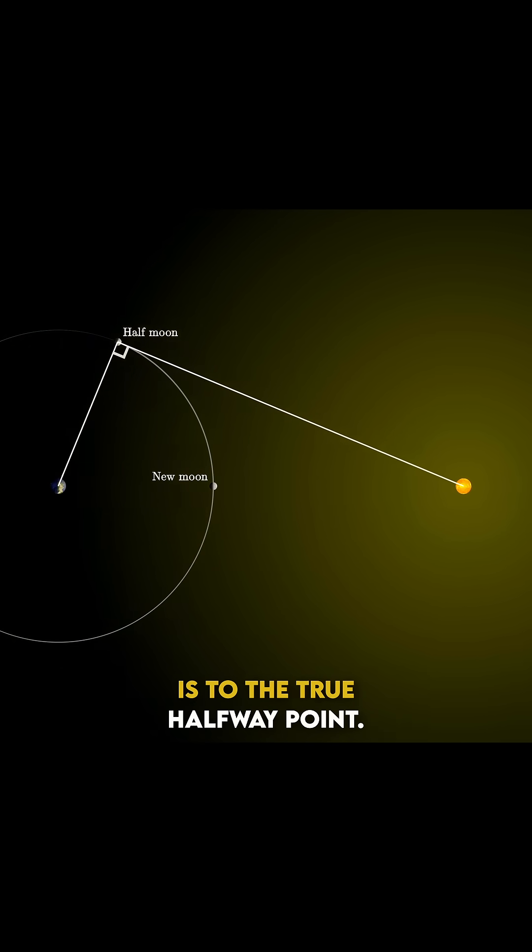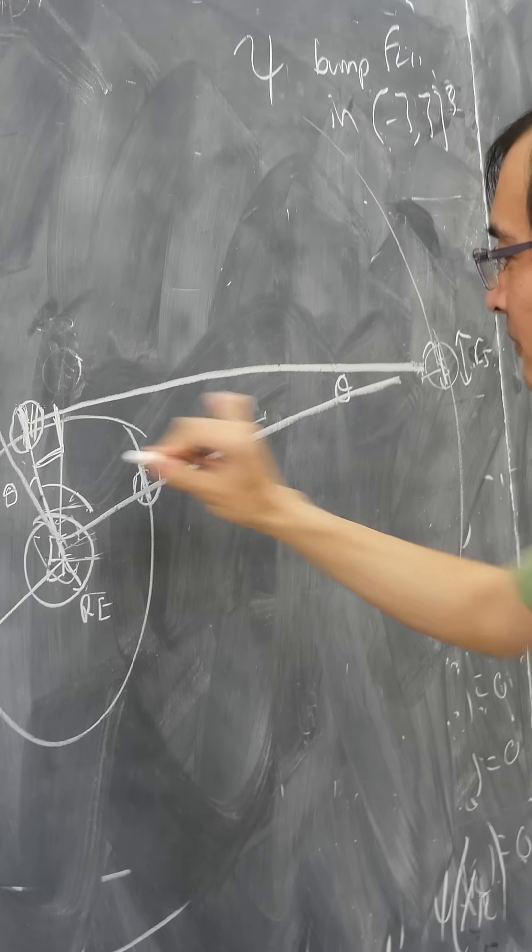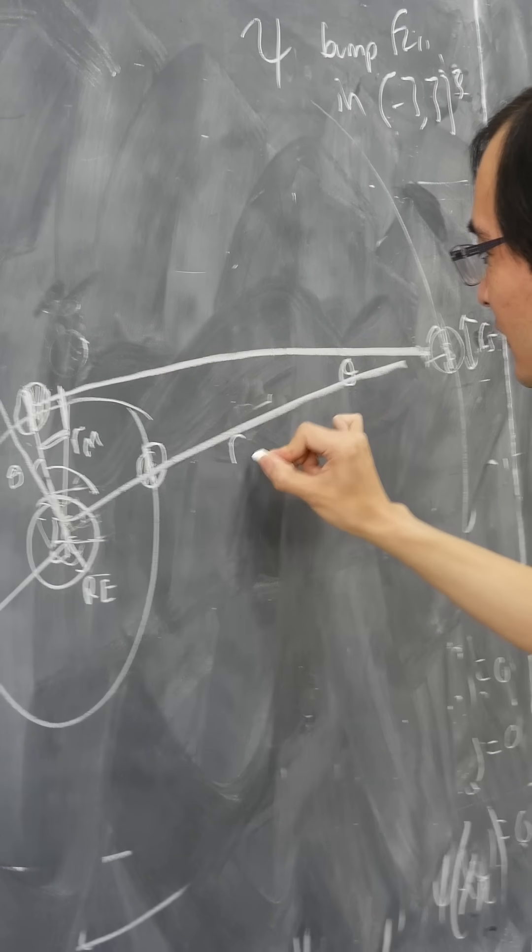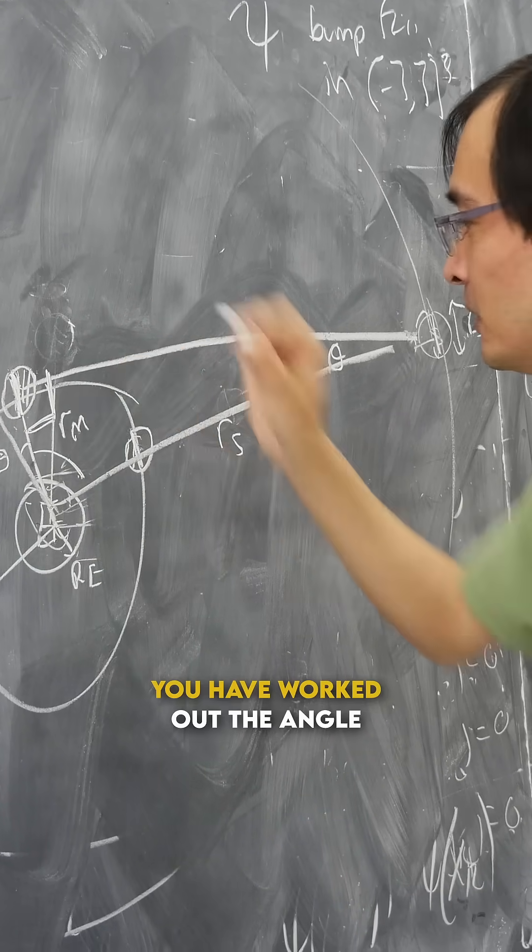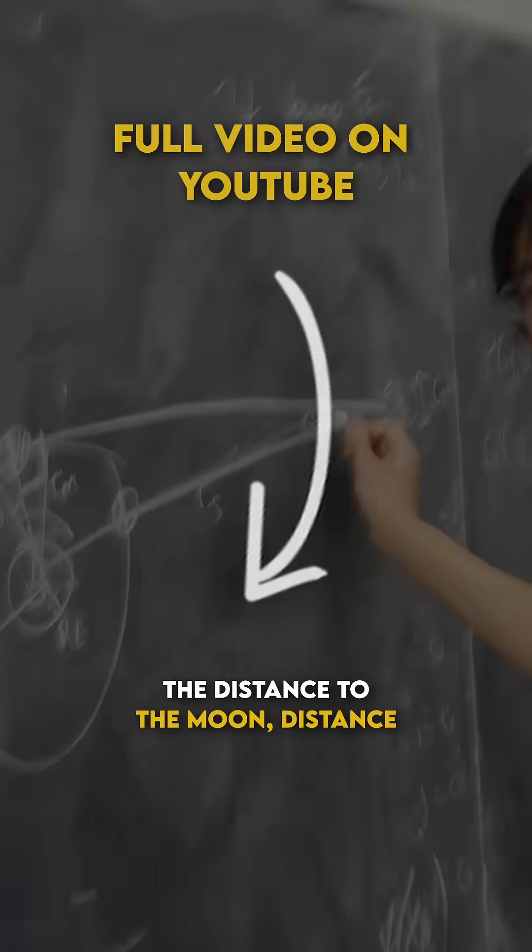The farther away, the closer it is to the true halfway point. And if you can work out that angle, you have worked out the angle of a right angle triangle involving the distance to the moon, the distance to the sun.